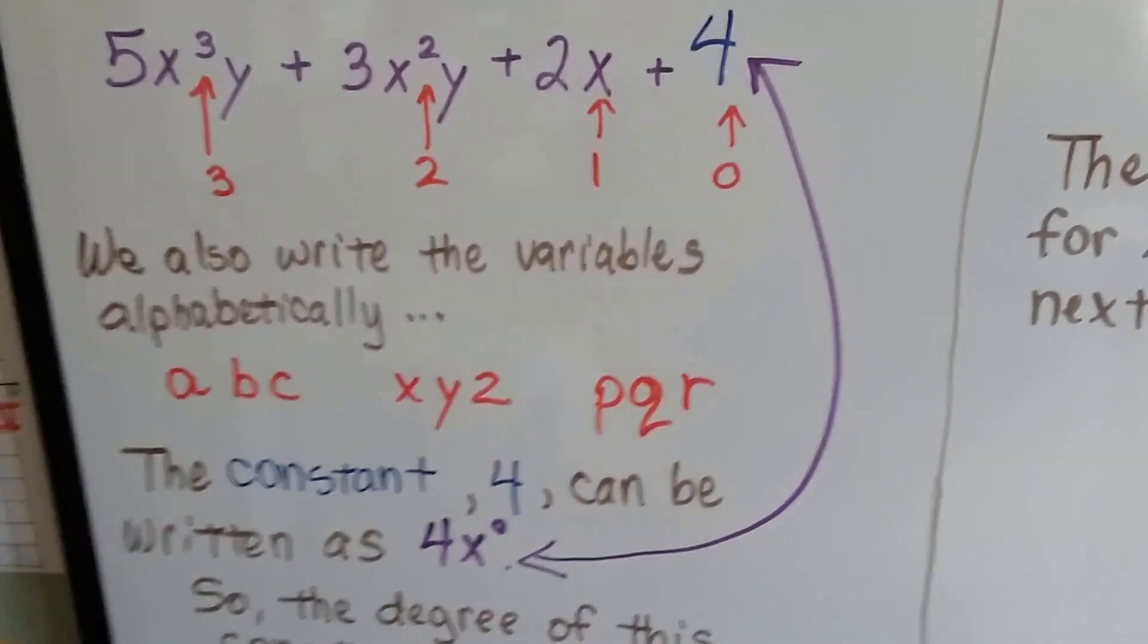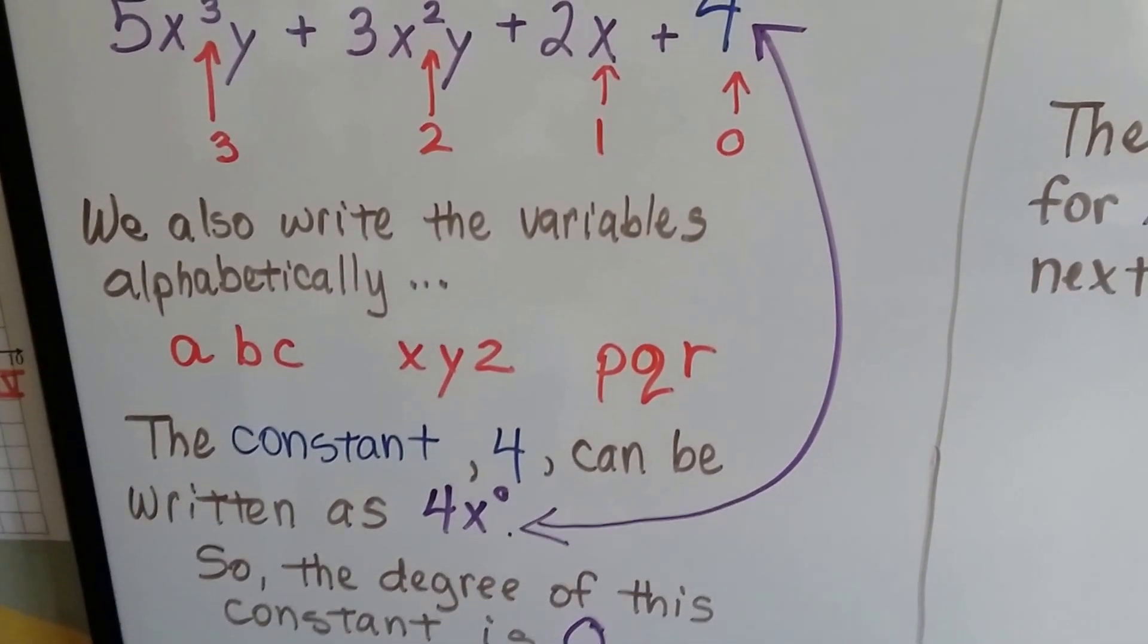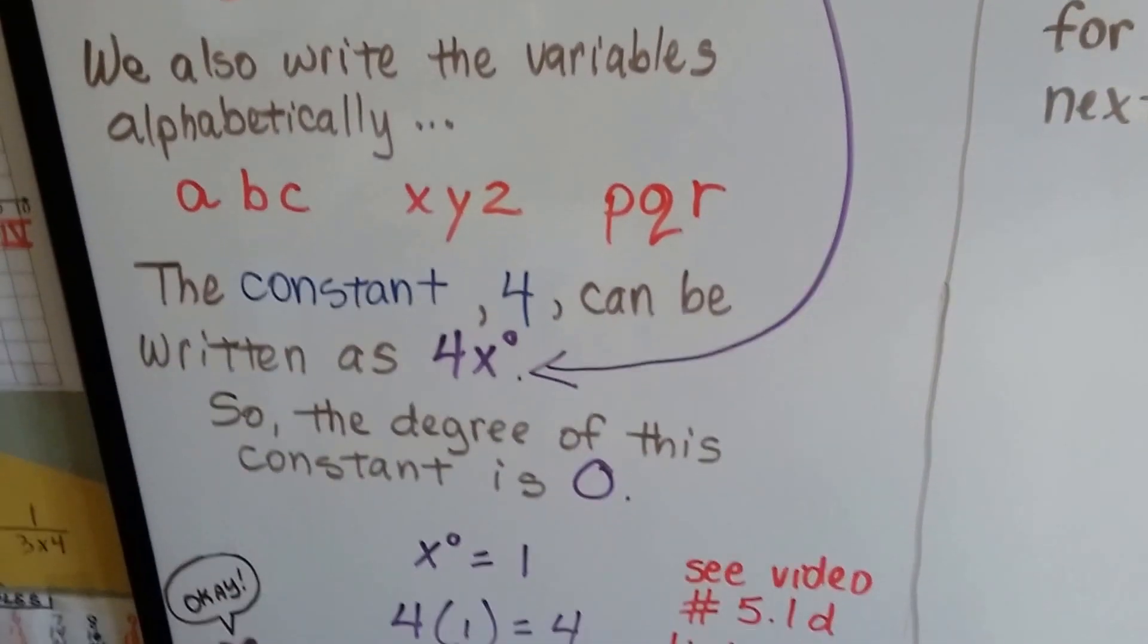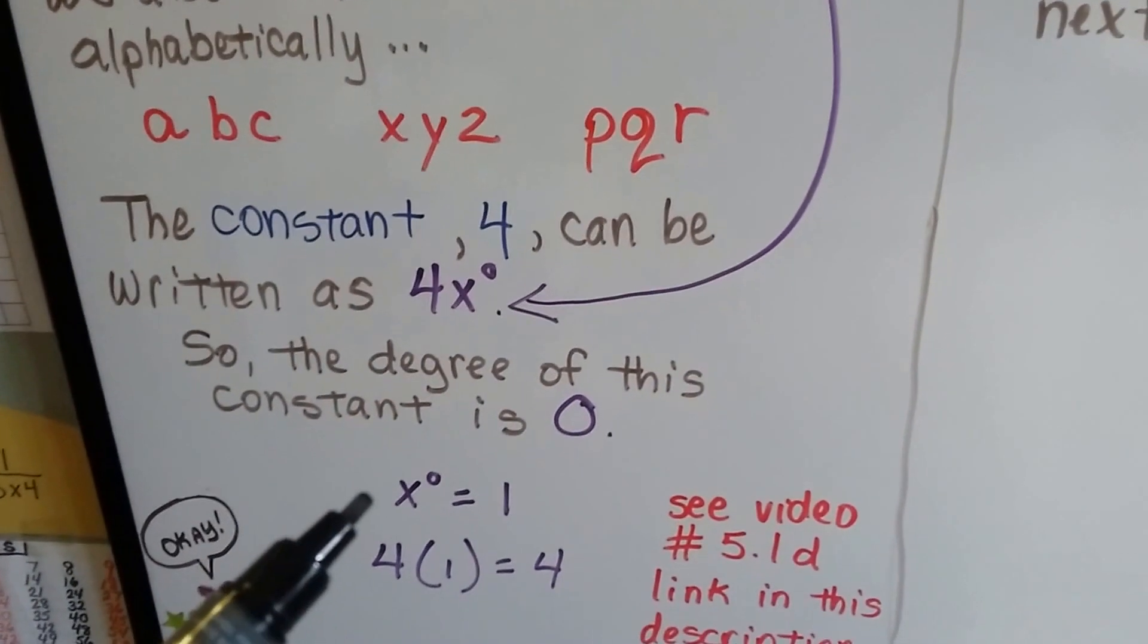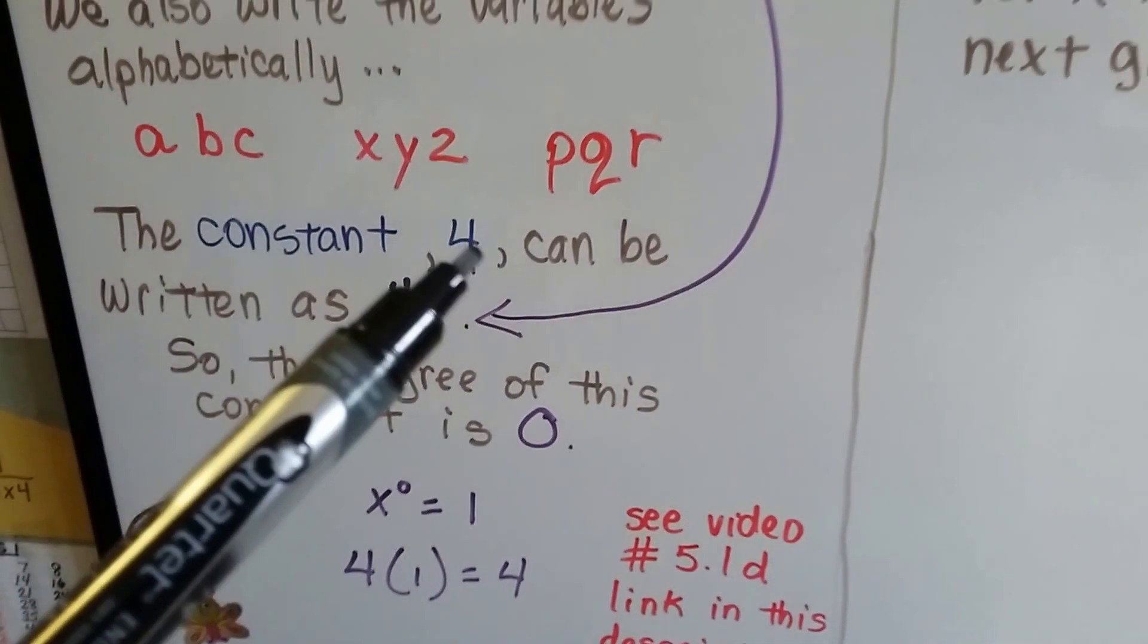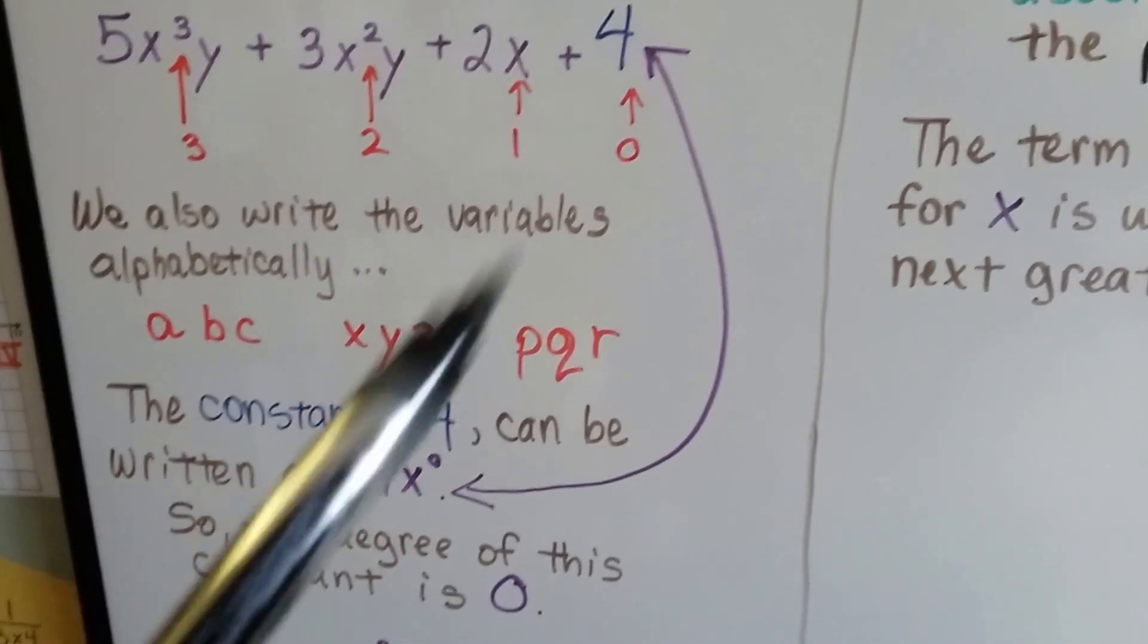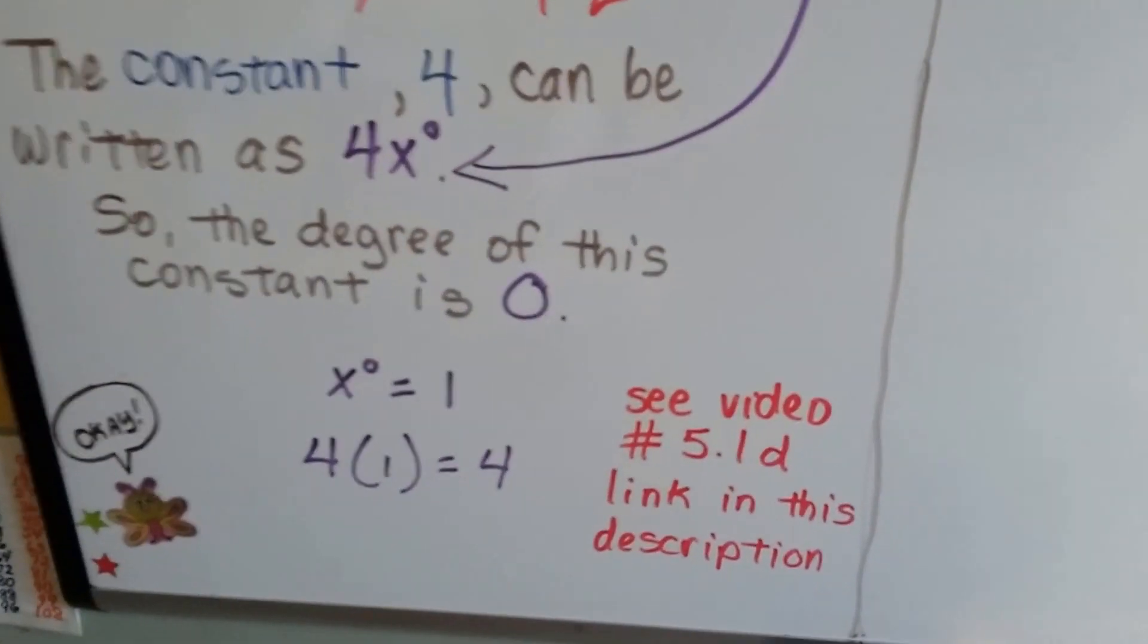Now this 4 is a constant, and that constant 4 can be written as 4x to the 0 power. So the degree of this constant is 0. x to the 0 power is equal to 1, so 4 times 1 is 4. That's why this 4 can be written as 4x to the 0 power. Then we can get its degree, can't we?